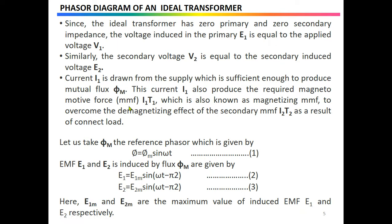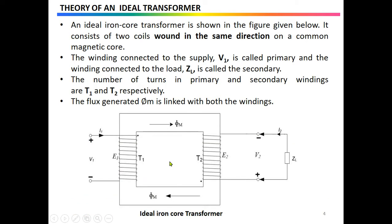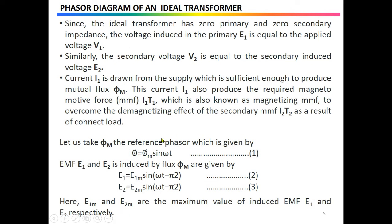The magnetomotive force I1·T1 (also known as the magnetizing MMF) overcomes the demagnetizing effect of the secondary MMF I2·T2 as a result of the connected load. Now, let Φm be the reference phasor, given by Φ = Φm sin(ωt), as seen during the derivation of the EMF equation. The induced EMFs E1 and E2 are given by the equations we already derived in the previous video lecture.